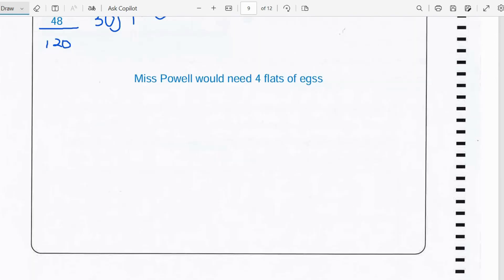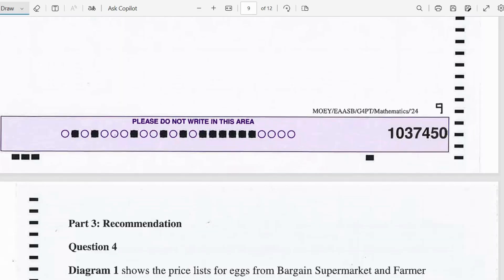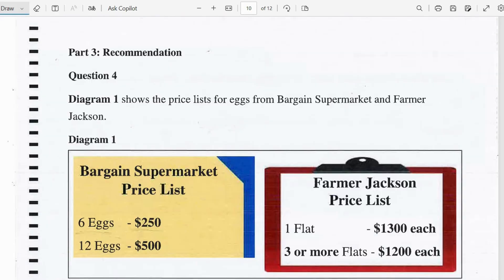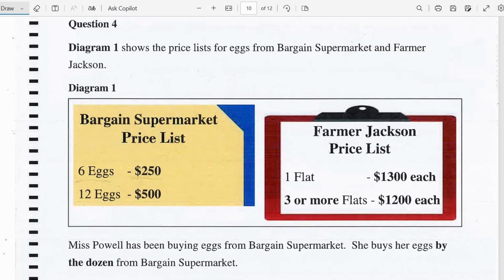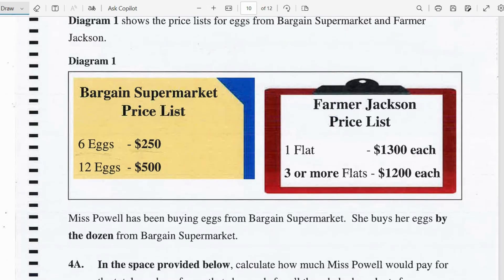I hope you're all following. Now let's move on to part 3 which is the recommendation. Question 4, diagram 1 shows the price list for the eggs from Bargain Supermarket and Farmer Jackson.